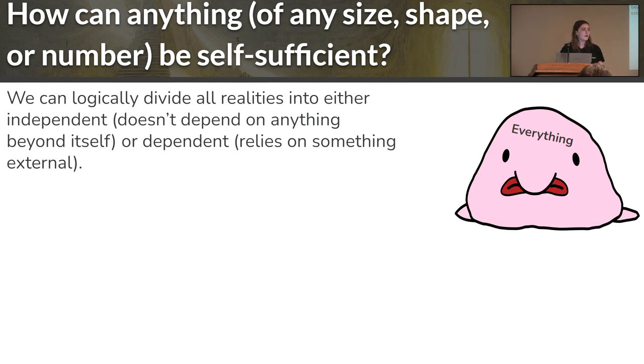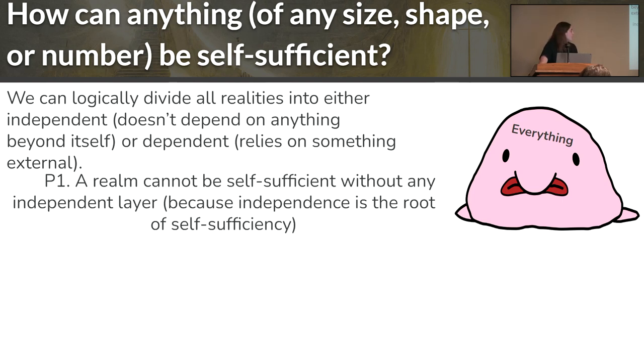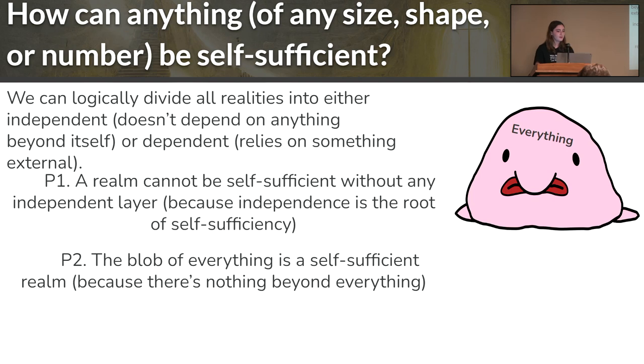Independent things don't depend on anything beyond themselves. They are this self-sufficient thing we're really looking for. Dependent things do depend on something else. They rely on something external to themselves. They have causes. We know that a realm or the universe can't be self-sufficient without having some independent thing in it, because independence is fundamentally the root of self-sufficiency.